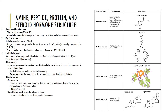Lipid derivatives consist of carbon rings and side chains built either from fatty acid chains or cholesterol. Eicosanoids are a subclass of lipid derivatives built from fatty acid chains and include the leukotrienes and prostaglandins. Steroid hormones are built from cholesterol molecules and include testosterone, estrogen, progesterone, corticosteroids, and calcitriol.